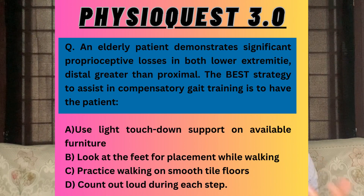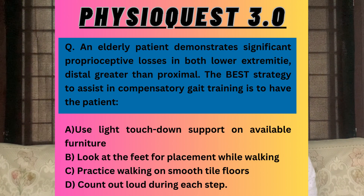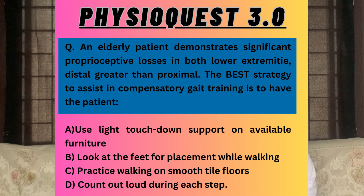The options given to us are: Option A — take a light touch or support from furniture and try to make the patient walk independently. Option B — ask the patient to look down to the floor and then walk. Option C — ask the patient to practice walking on a smooth surface like smooth tile surfaces. And Option D — ask the patient to count out loud while walking. These are the four options and we have to find the correct answer.